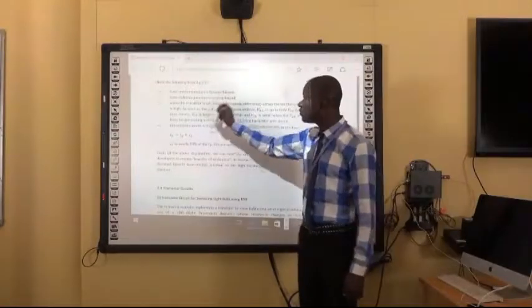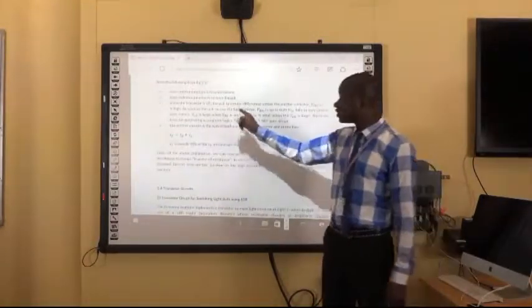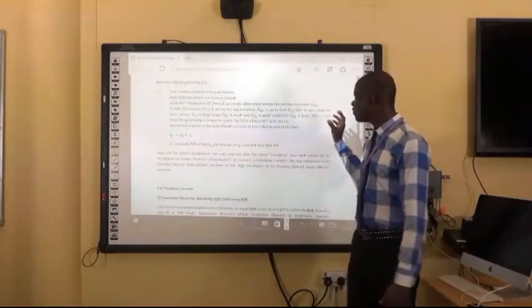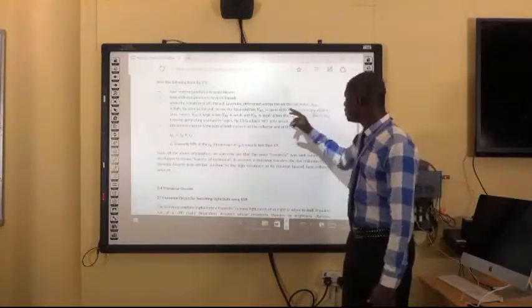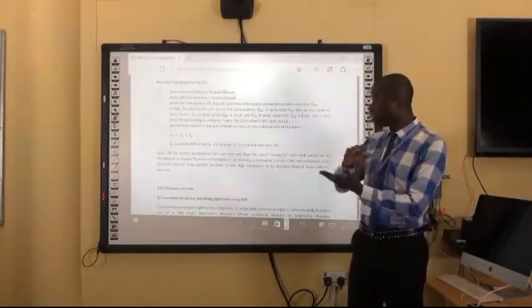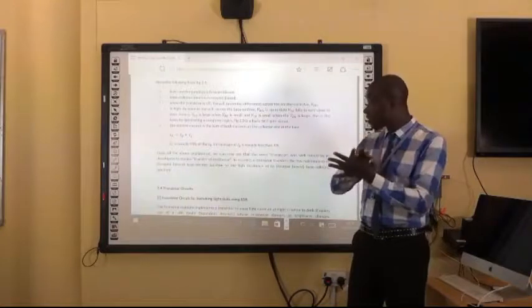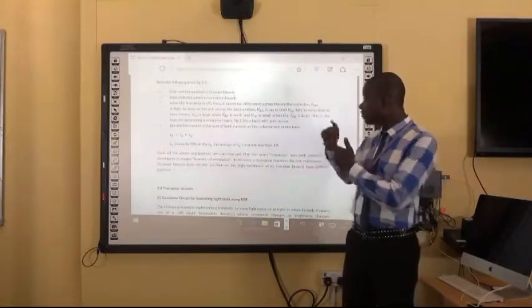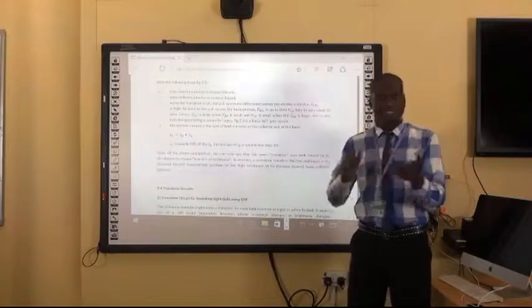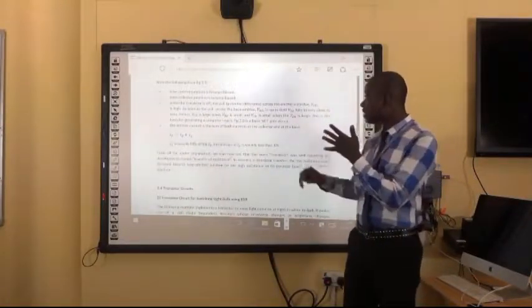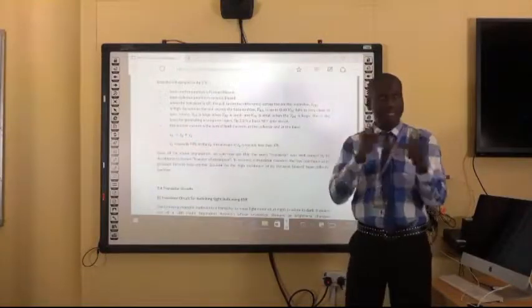The base-emitter junction is forward biased and the base-collector junction is reverse biased. When the transistor is on, that means VBE is approximately 0.7 volts. That is the reason why we have the transistor to represent 1 and 0 logic. That is the principle of 1 and 0 logic.